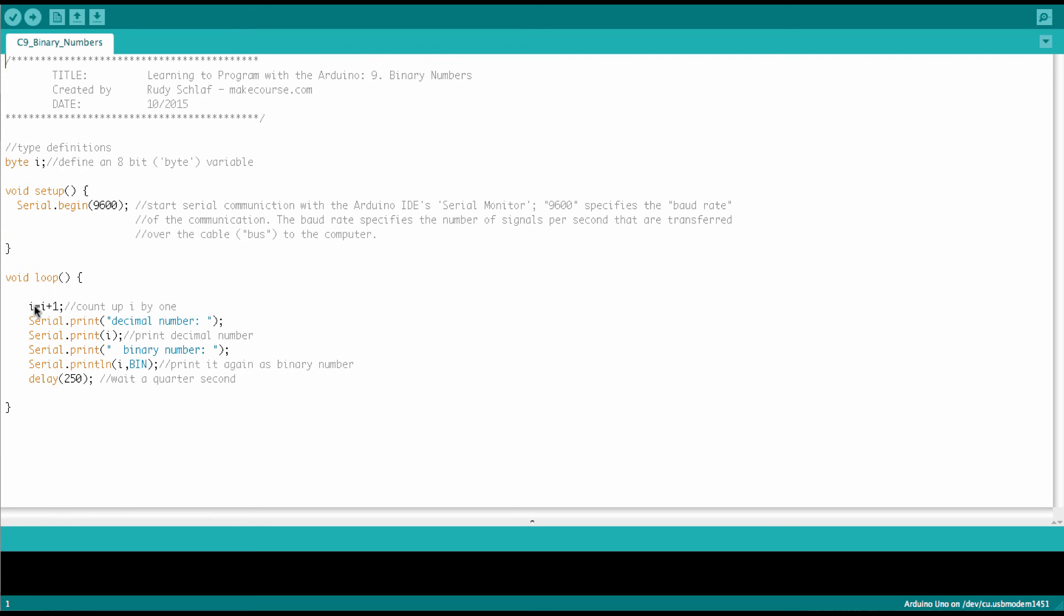And then in the main loop, all I do is incrementing that variable i by 1 every time we go through the loop. And then I print it as a decimal number and then as a binary number, followed by a line feed. And then waiting for 250 milliseconds, a quarter second, and then we do the next number. So let's see what happens. Let me upload this.